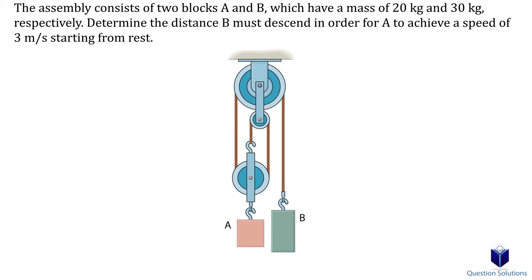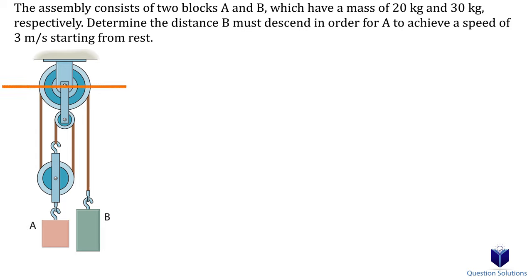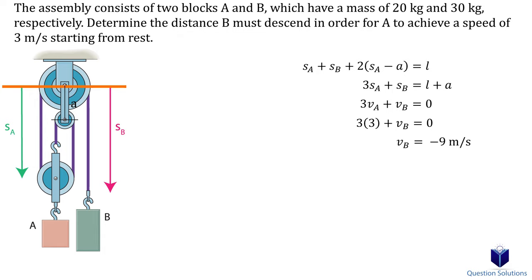In this pulley problem, we need to determine how far block B must descend so that block A has a speed of 3 meters per second. Our first step is to draw a datum for the pulley at the big pulley on top. Note the fixed length of the middle bar, which we will label A. For our position coordinates: SA + SB + 2(SA) − A equals the total length. Let's simplify, then take the time derivative to get velocity. Plugging in the speed of A as 3 meters per second, we find that block B has a speed of 9 meters per second in the opposite direction. Going back to the position equation, we consider a change in displacement using delta notation and isolate for SA.